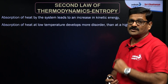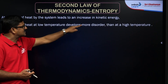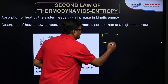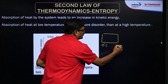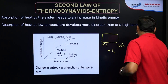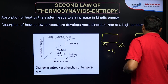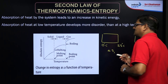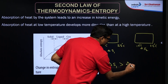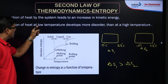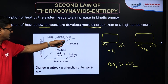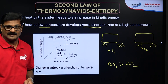Absorption of heat at low temperature develops more disorder than at high temperature. For example, if a system changes from 0°C to 25°C, the entropy change is ΔS₁. The same system changing from 10°C to 25°C gives entropy change ΔS₂. The magnitude of ΔS₁ is greater than ΔS₂ — meaning absorption of heat at lower temperature produces more disorder. Similarly, going from solid to liquid to gas, entropy increases extensively.